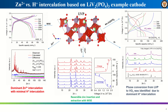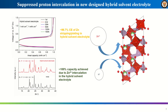Further ex-situ analysis shows reversible zinc intercalation and deintercalation in LVP and the good structural stability of LVP. In addition, we also designed a new electrolyte with reduced water activity by a hybrid solvent. This electrolyte shows high compatibility with zinc anode, showing a dendrite-free and highly reversible zinc plating-stripping performance. Suppressed proton intercalation was further confirmed by using LVP electrodes, with near 100% capacity achieved due to zinc intercalation in this hybrid electrolyte.